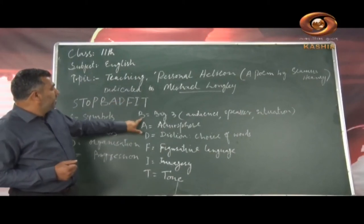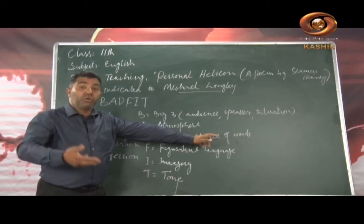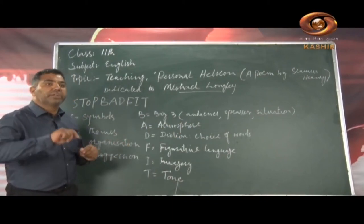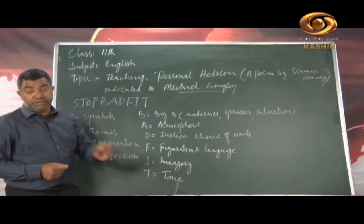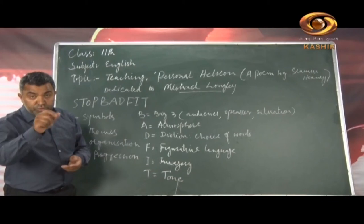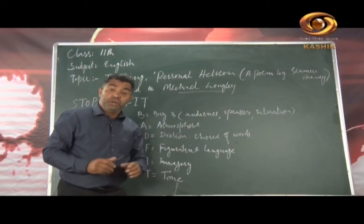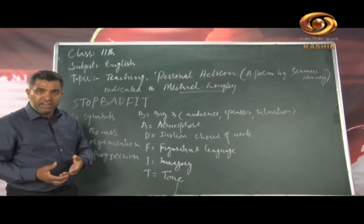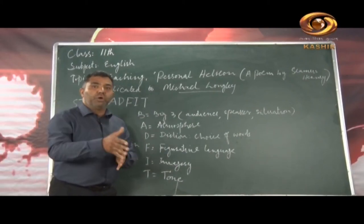B stands for 'Big Three.' First, you need to understand who the audience of the poem is — who is it talking to, who is it conveying its message to. Second, as a student of literature, you need to understand who is the speaker in the poem. Third, you need to understand the situation — is it happy, is it sad, what kind of environment surrounds the poem.